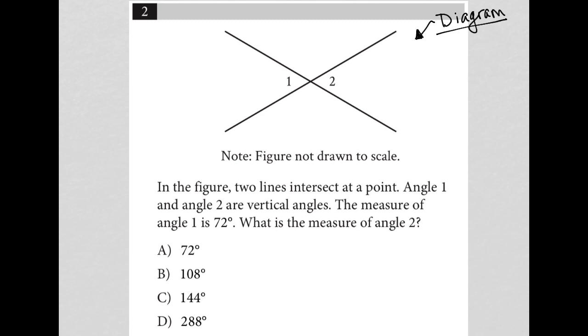We have two intersecting lines here, and it looks like those two intersecting lines create two angles, angle one and angle two.